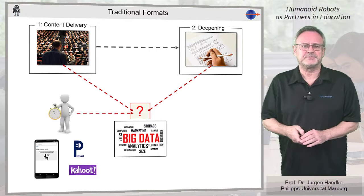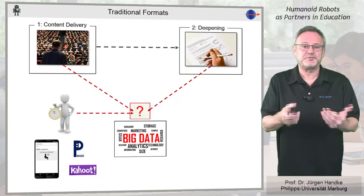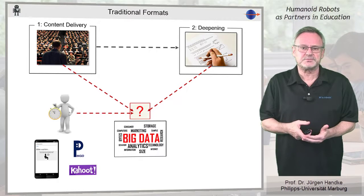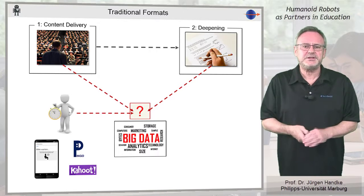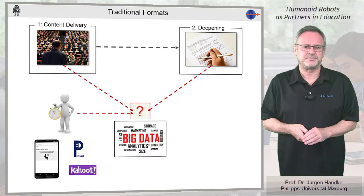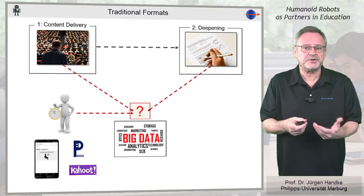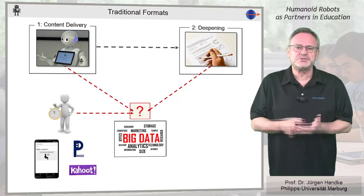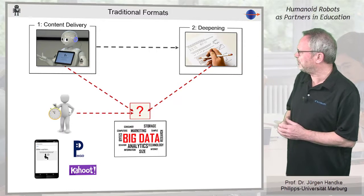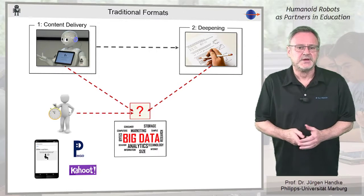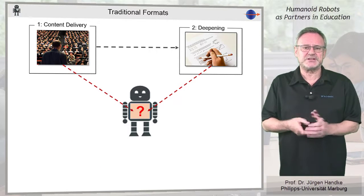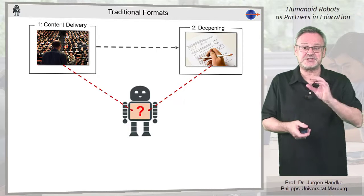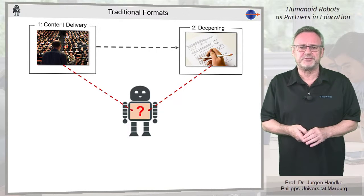Even live voting, which can easily be performed and controlled by a robot, would only take time off the clock needed for content delivery in classical teaching and learning scenarios. And one thing is currently impossible: the replacement of a human speaker by a robot. In other words, there are no real benefits for the use of robots in classical teaching scenarios, except the fast-passing charm of the new.